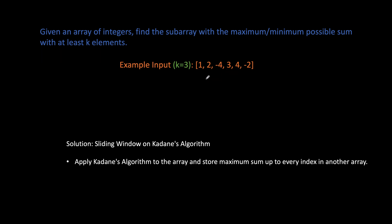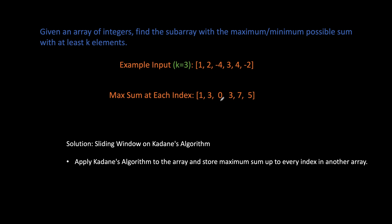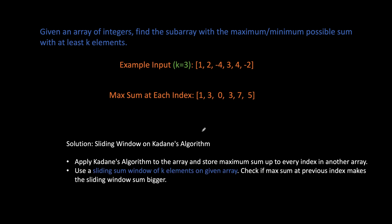I solve this question using a sliding window on Kadane's algorithm. We apply Kadane's algorithm to the array and store the maximum sum up to every index in another array. As done in the previous example, I've calculated the maximum sum at every index and stored the values. Now we use a sliding window of k elements on the example array, checking if the maximum sum at the previous index makes the sliding window sum bigger. Starting with a k=3 element sliding window, the sum of the window is minus one — there's nothing before the first index, so global max is minus one.